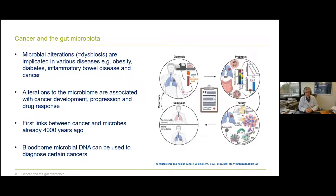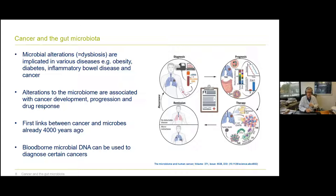Microbiome alterations — so-called dysbiosis — are implicated in many diseases: obesity, fatty liver disease, diabetes, inflammatory bowel disease, and also cancer. Alterations to the microbiome are associated with cancer development, cancer progression, and drug response. Interestingly, the first links between cancer and microbes date back already 4,000 years — quite clever people drew that connection. This ranges from diagnosis to prognosis to treatment and remission. Bloodborne microbial DNA, for example, can be used to diagnose certain cancers.